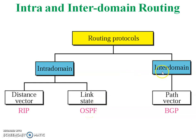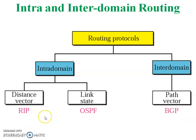The inter domain routing protocol uses path vector, and the example is BGP. RIP, OSPF, and BGP videos will be available soon on this channel.